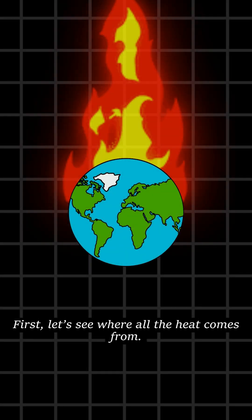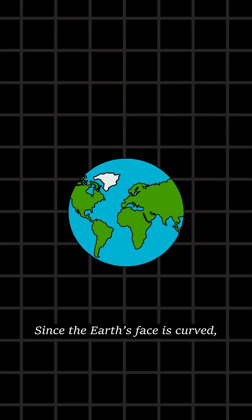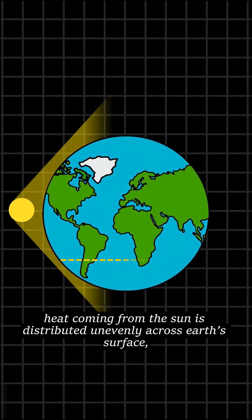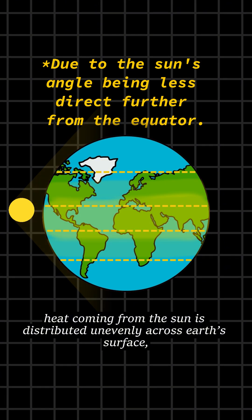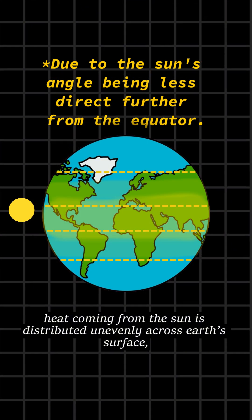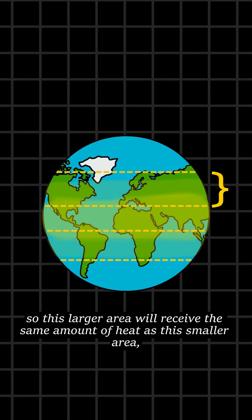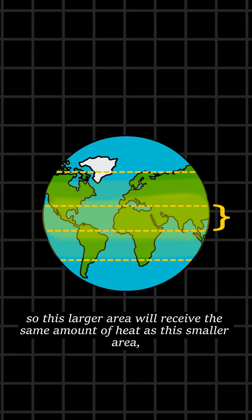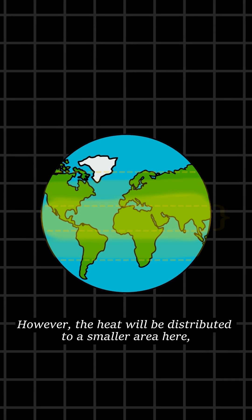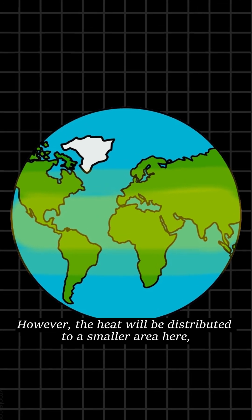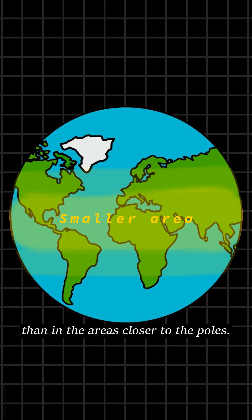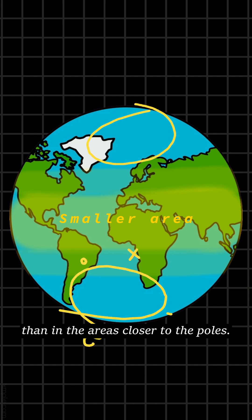First, let's see where all the heat comes from. Since the Earth's face is curved, heat coming from the sun is distributed unevenly across Earth's surface. So this large area will receive the same amount of heat as this smaller area closer to the equator. However, the heat will be distributed to a smaller area here, meaning the heat will be more concentrated here than in the areas closer to the poles.